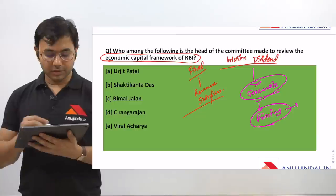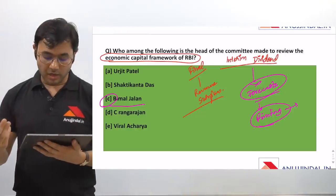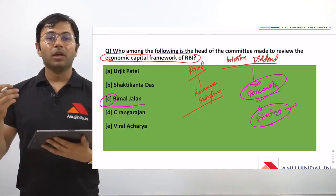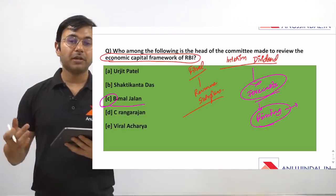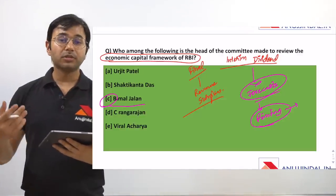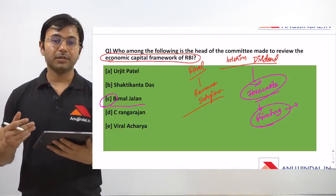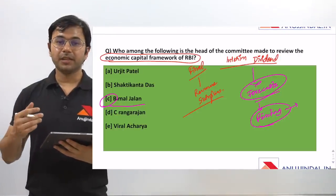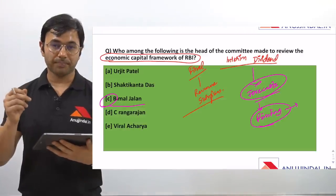The answer to the committee head question is C. More details about the impacts of interim and final dividends, and the assumptions or conclusions that can be drawn from them, have been provided in the PDFs on February current affairs for Phase 2 ESI.